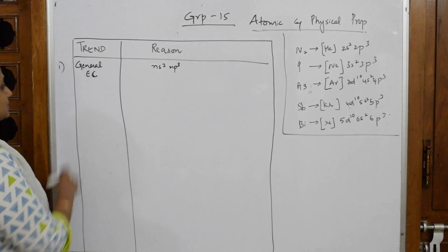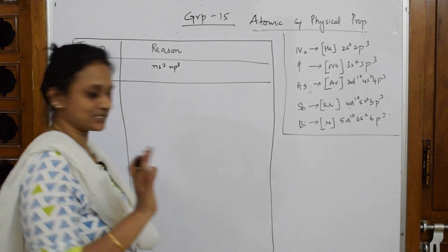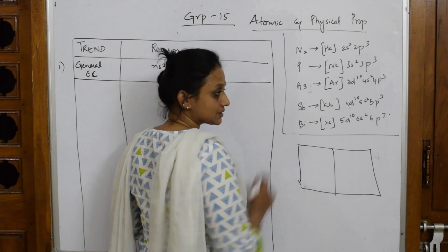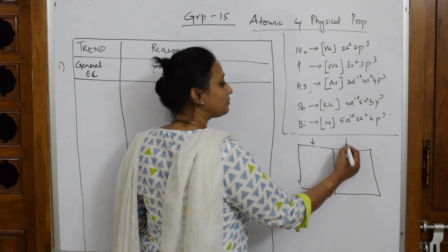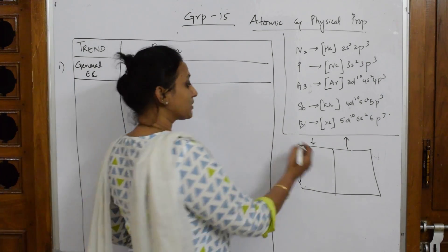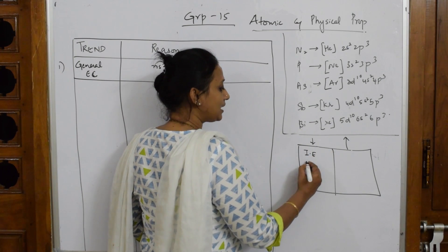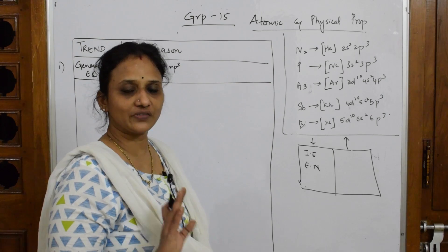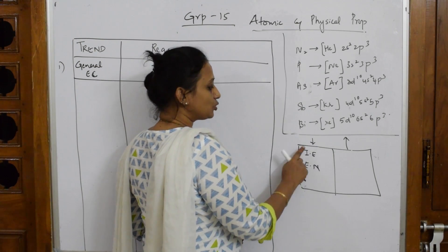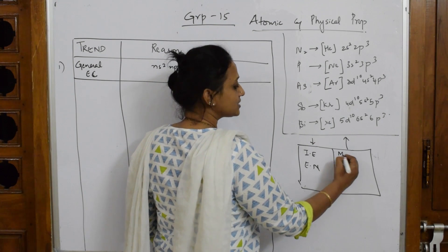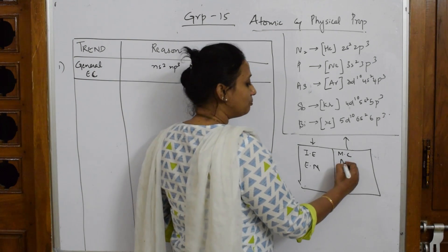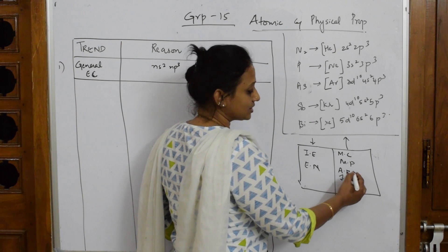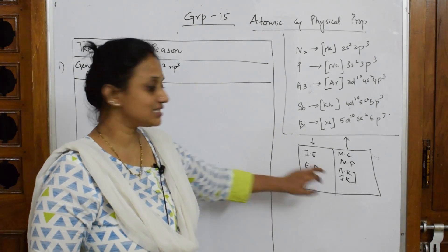Remember one important logic: as soon as you are learning this, try to make a table — first table in decreasing order, second table in increasing order. What trends are decreasing? Your ionization enthalpy and electronegativity will decrease down the group. What will increase? Metallic character, melting point, atomic radii, and ionic radii — also referred to as covalent radii — will all increase down the group.